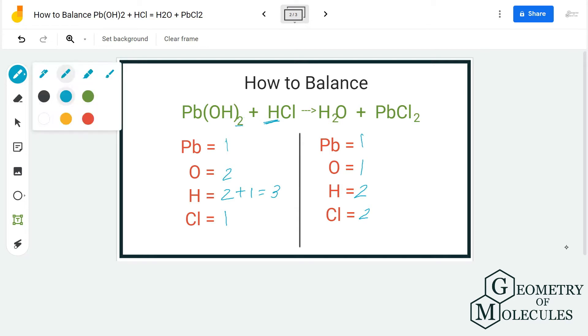As you can see, chlorine atoms are two on the product side but only one on reactant side. It should be equal on both sides. So we are going to start balancing by first balancing the chlorine atoms. We're going to add a coefficient 2 here.